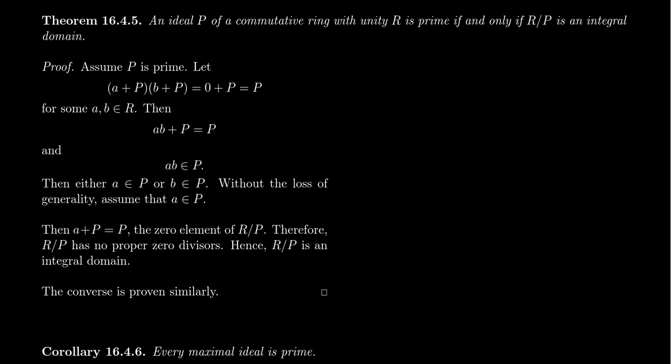So this then shows us that the ring R mod P has no proper divisors of zero. Since it's commutative, since it has unity, that then implies that it's an integral domain. And I will leave it as an exercise to the viewer here to prove the other direction. Assume that R mod P is an integral domain. And then prove that P is a prime ideal.